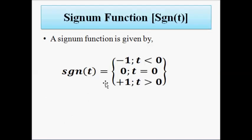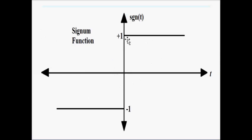Then we have the signum function. The signum function has a constant magnitude value of −1 for t less than 0 and a constant magnitude value of +1 for t greater than 0. It is basically an inverted unit step signal on both sides — a constant value of +1 on the positive real axis and −1 on the negative real axis. This is the signum function.